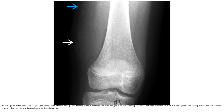This is an AP radiograph of the knee in an 11-year-old with lateral swelling and tenderness, showing blurring of the normal fat-muscle interface between subcutaneous fat and muscle, with displacement of the soft tissue planes.